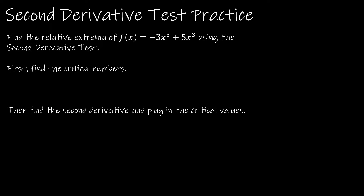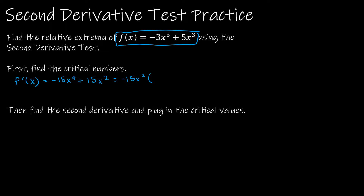For this question, we're going to only find the relative extrema — the min and the max. We don't have to find the intervals of concavity or the intervals of increase and decrease. Step one: find the critical numbers. f'(x) = -15x⁴ + 15x², which factors as -15x²(x² - 1) = -15x²(x+1)(x-1). So the critical numbers are x = 0, x = -1, and x = 1.